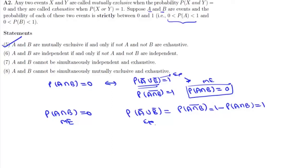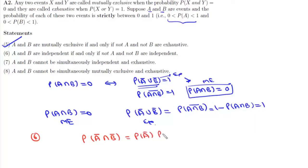Statement 6: A and B are independent if and only if not-A and not-B are independent. This is a standard result, but we will prove it. Let us assume A⁰ and B⁰ are independent, meaning P(A⁰ ∩ B⁰) = P(A⁰) · P(B⁰). This equals P(A ∪ B)⁰, and it equals P(A⁰) · P(B⁰).